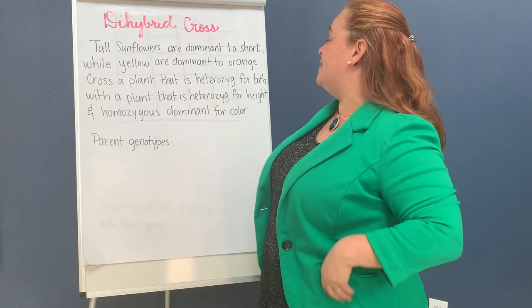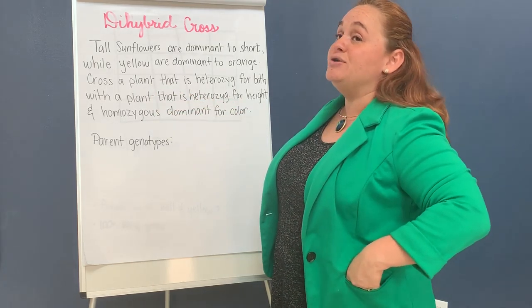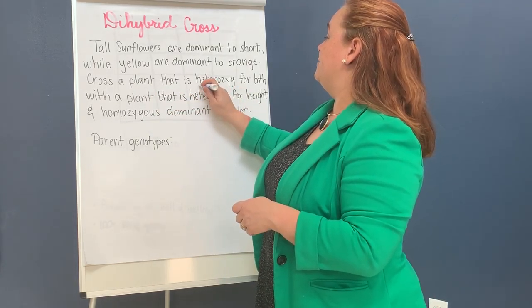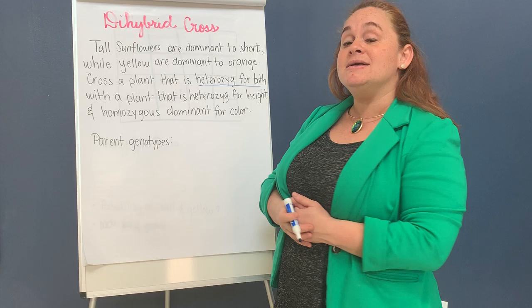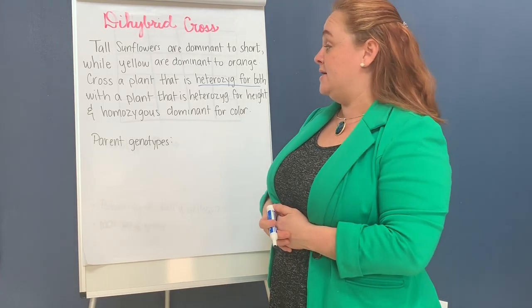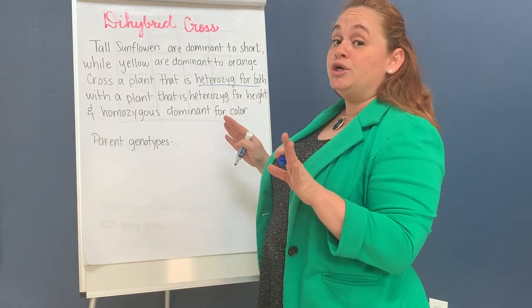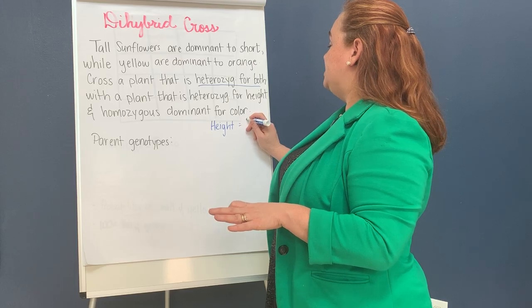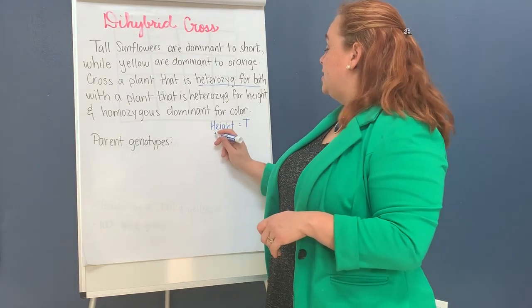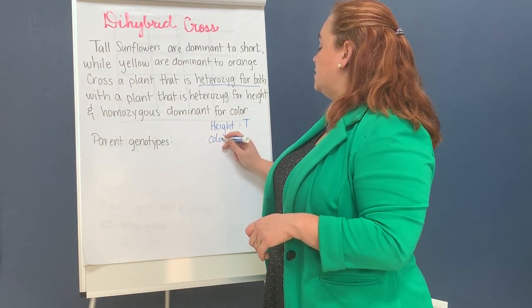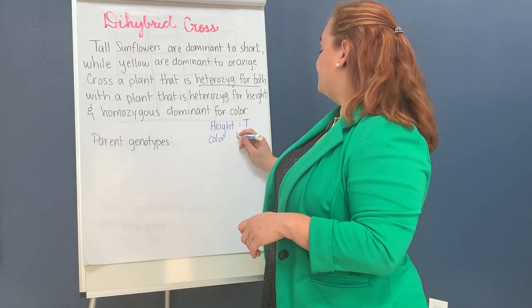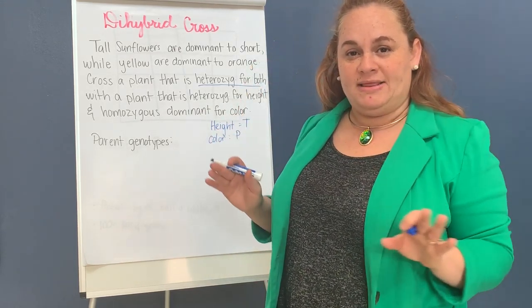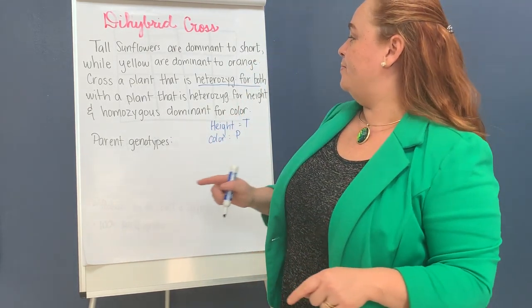Let's cross a plant that is heterozygous for both traits. Because we're looking at two aspects, let's use the letter T for height and the letter P for color, so we can all be on the same page.